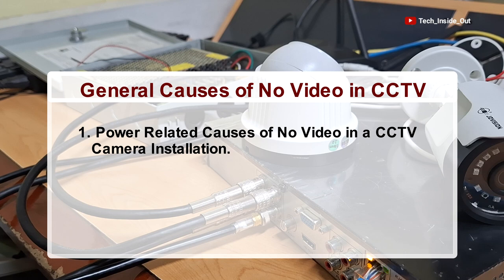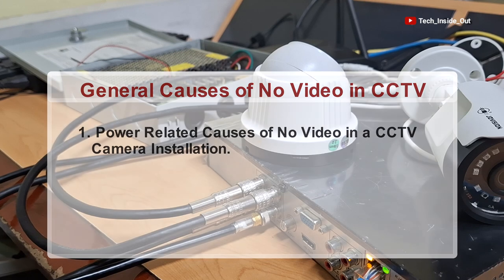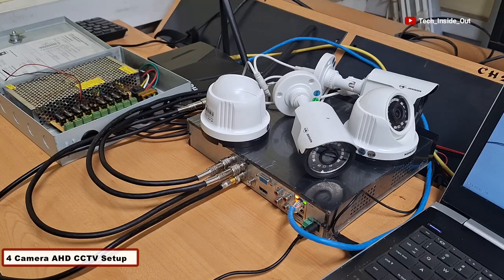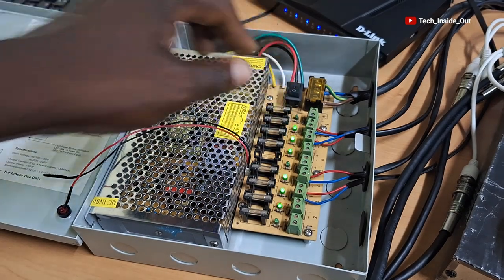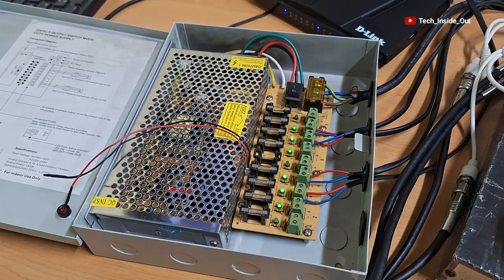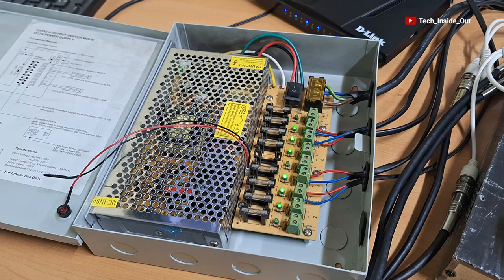Let's now look at power-related causes of no video problems in a CCTV camera installation. In an event where all of your CCTV cameras show no video, you'll have to check if there is power in your power supply unit and get it restored if it is off, or replace your power supply unit if it is found faulty, because an absence of power will mean that all cameras connected to it will not be powered on, causing the no video problem.